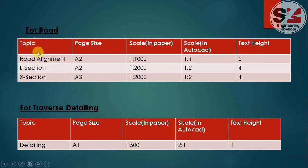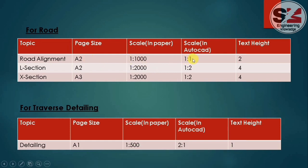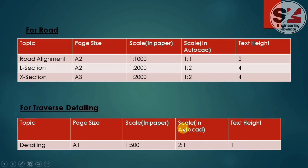Similarly, for the road I have used this data. For the road alignment I have taken paper size A2 and scale 1:1000; after conversion we get 1:1, and text height is 2. For the L-section and chorus section I have taken paper sizes A2 and A3, scales 1:2000 and 1:2000, giving conversions of 1:2 after the formula. For the 1:500 case, after conversion the AutoCAD scale is 2:1, and text height is 1.